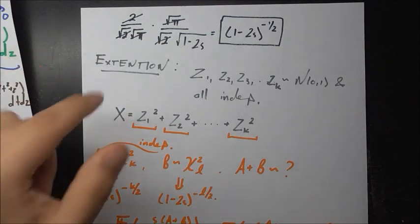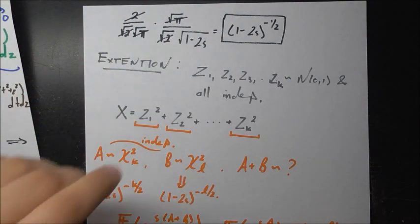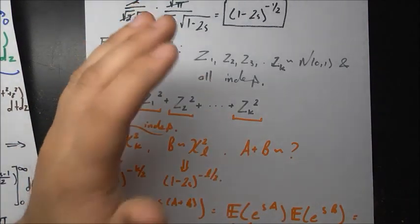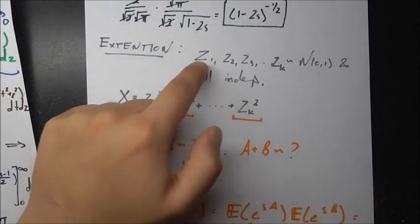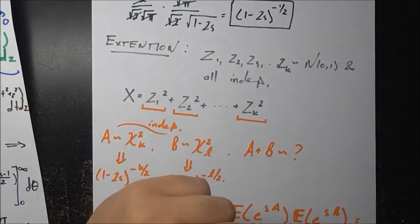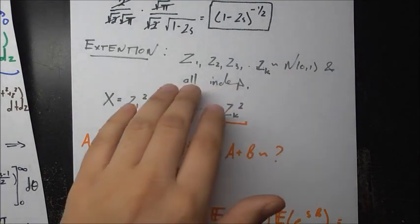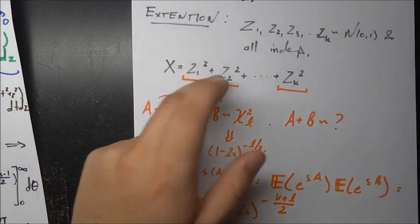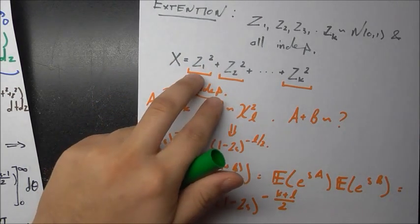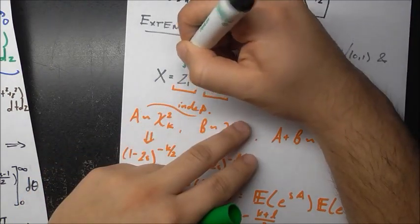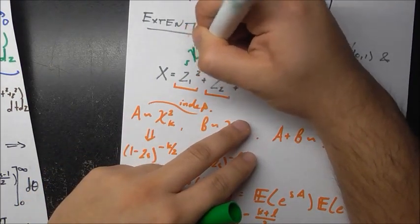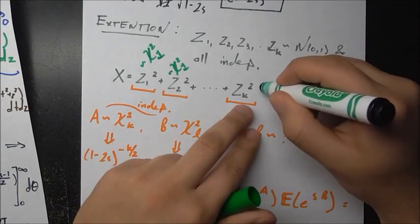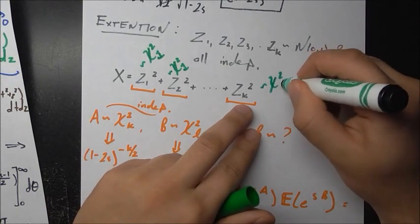This extends naturally: suppose we have k independent standard normal random variables z₁, z₂, ..., zₖ, all N(0,1). We let x be the sum of all their squares: x = z₁² + z₂² + ... + zₖ². Each zᵢ² alone is chi-squared with 1 degree of freedom.